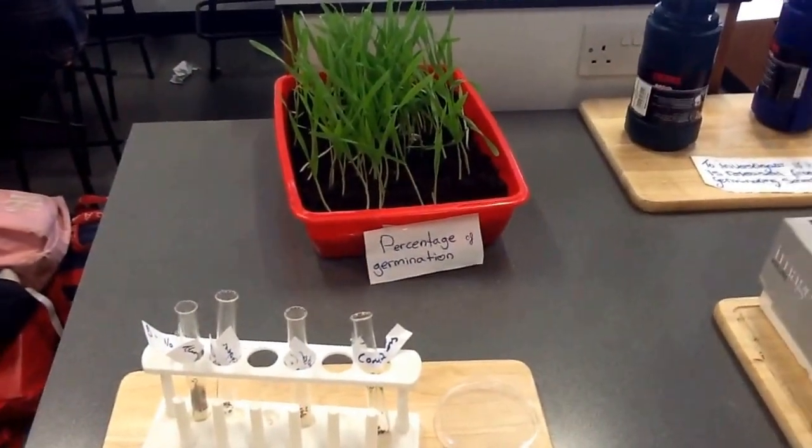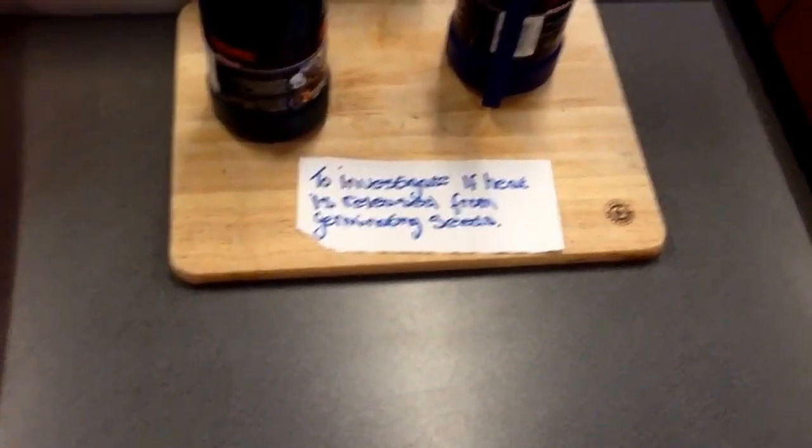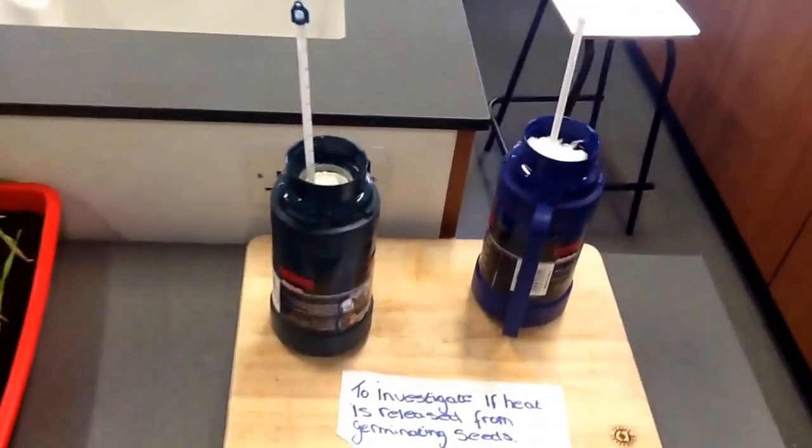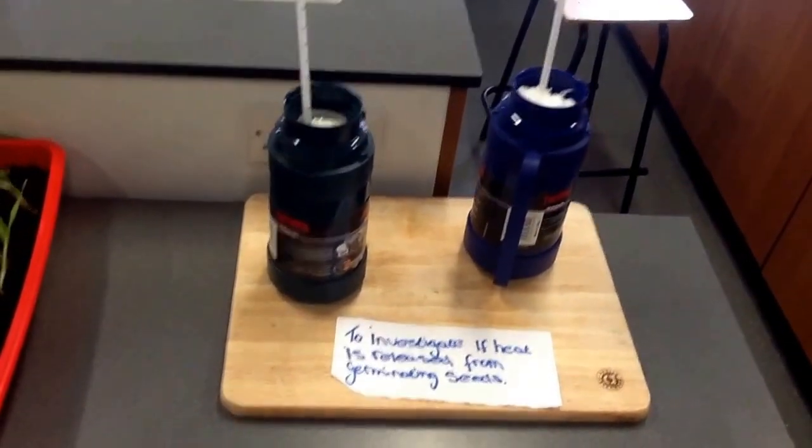This experiment shows that heat is released from germinating seeds. We got pea seeds in both flasks. We boiled one set of seeds, killing the seeds by denaturing them.